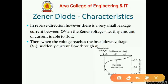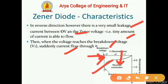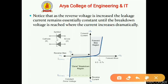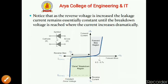In reverse biasing, there is a very small leakage current between zero volts and the Zener voltage. A tiny amount of current flows until the voltage reaches the breakdown voltage, at which point current suddenly flows through it. The combined VI characteristic shows that as reverse voltage increases, leakage current remains essentially constant until breakdown voltage is reached, where the current increases dramatically, and the Zener diode provides a constant Zener voltage.